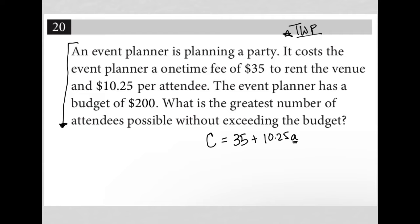The next sentence, the event planner has a budget of $200. What is the greatest number of attendees possible without exceeding the budget? Okay, well, if the budget is $200, that means the event planner can spend no more than $200.